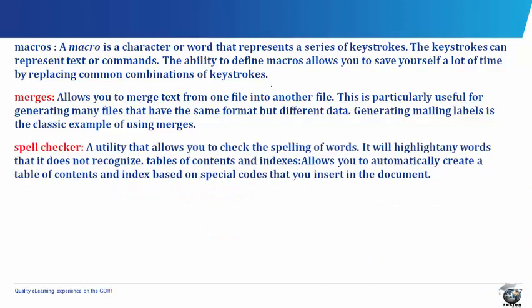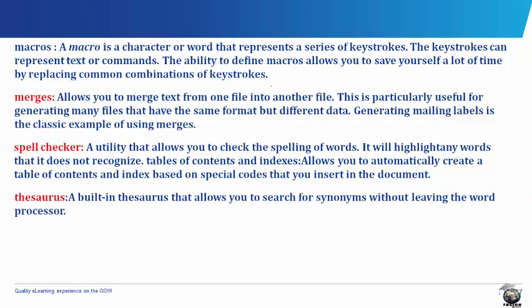We have spell checkers. Most Word Processors come with a spell checker that allows you to check the spelling of words — it will highlight any word that it does not recognize. Tables of Contents and Indexes also allow you to automatically create a Table of Contents and Index based on special codes that you insert in the document. Most Word Processors also come with a thesaurus, allowing you to search for synonyms without leaving the Word Processor.